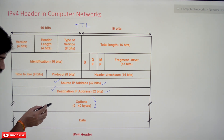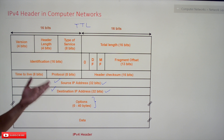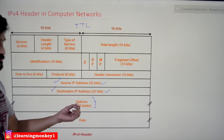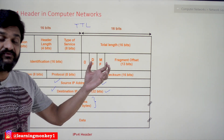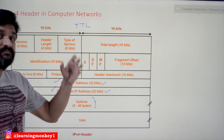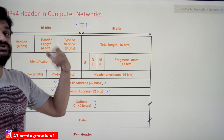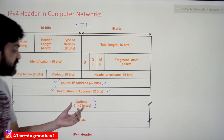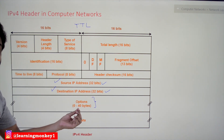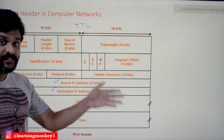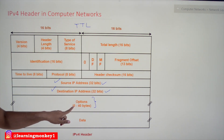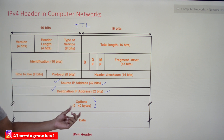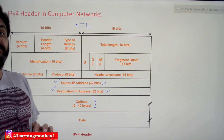This part of the header is very important to understand — this is the Options field. The content in this field is optional, so there is no guarantee that options will be present in every IPv4 packet. They are going to vary from one packet to another based on the particular situation. These options are going to vary from 0 to 40 bytes.